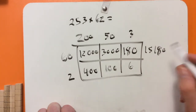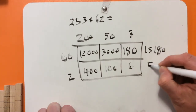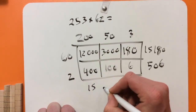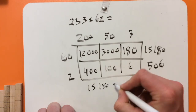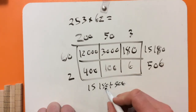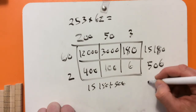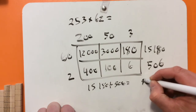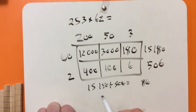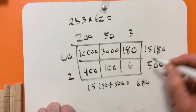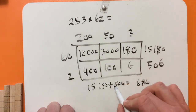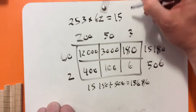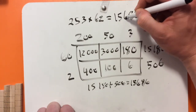400 plus 100 is 500, plus another 6 is 506. So I then need to add 15,180 plus 506. I've got zero 1s plus 6 ones — that's 6 ones. I've got zero 10s plus 8 tens — 80. I've got 100 plus 500 — 600. And there are no extra thousands, so it's 15,000. So 15,686 is our answer.